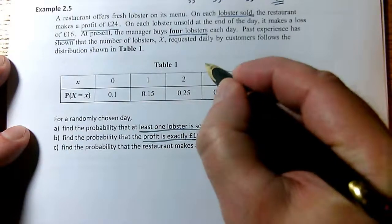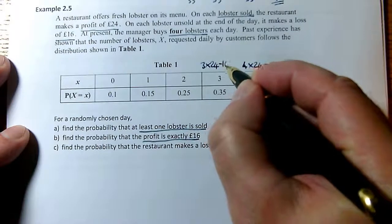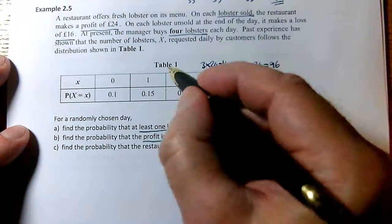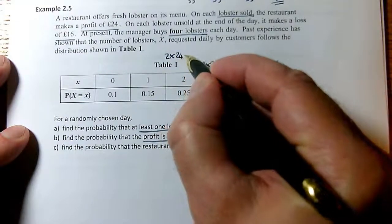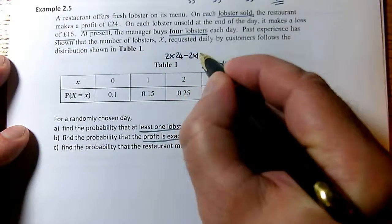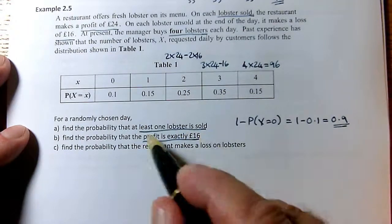If I only sell three of them, then I make three lobsters times £24 profit, but I make a £16 loss on the unsold one. If I sell two, it's two times 24 minus two times 16. And all I need to do is work out which events give me a profit of exactly £16.